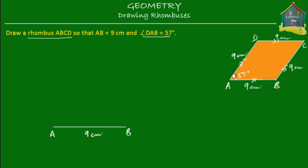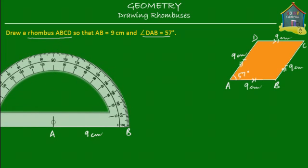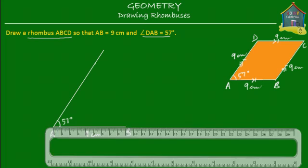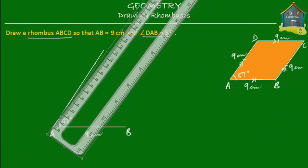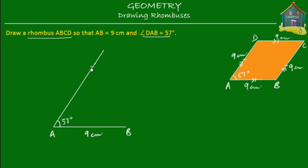Next, we can make the angle at A, which is 57 degrees with AB. So we use our protractor, place it at point A, and mark an angle of 57 degrees with AB. 57 degrees is over here, so I mark a point, remove the protractor, and join this point with A — that's 57 degrees. Point D is at 9 cm from A, so I take a ruler and mark this point — this is my point D, and AD is equal to 9 cm.